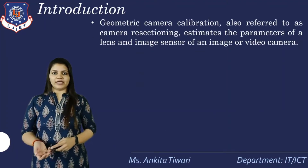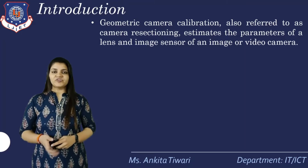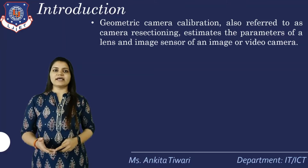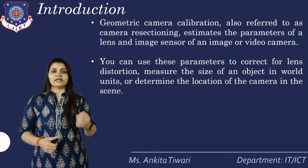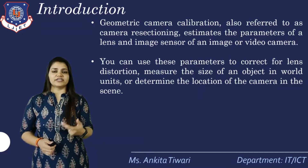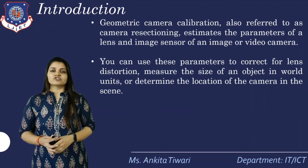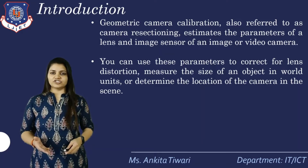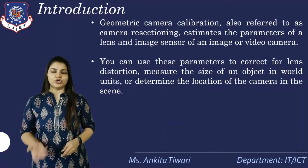The geometric camera calibration parameters are also referred to as camera resectioning. This involves estimating the parameters of a lens and the image sensor of an image or video camera. We have already studied the two types of sensors in camera, that is CMOS and CCD. These parameters can be used to correct for the lens distortion in the camera, and also to measure the size of an object in real-world units.